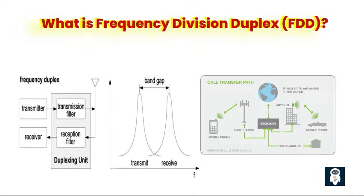What is frequency division duplex (FDD)? Frequency duplexing is a technique employed in both analog and digital mobile radio systems to facilitate simultaneous transmission and reception between a mobile device and a base station. The primary goal of frequency duplexing is to divide the available frequency band into two distinct partial bands: the uplink band and the downlink band. The uplink band refers to the transmission band of the mobile device and the receiving band of the base station — it is utilized for transmitting signals from the mobile device to the base station. The downlink band, on the other hand, represents the receiving band of the mobile device and the transmission band of the base station, responsible for transmitting signals from the base station to the mobile device.